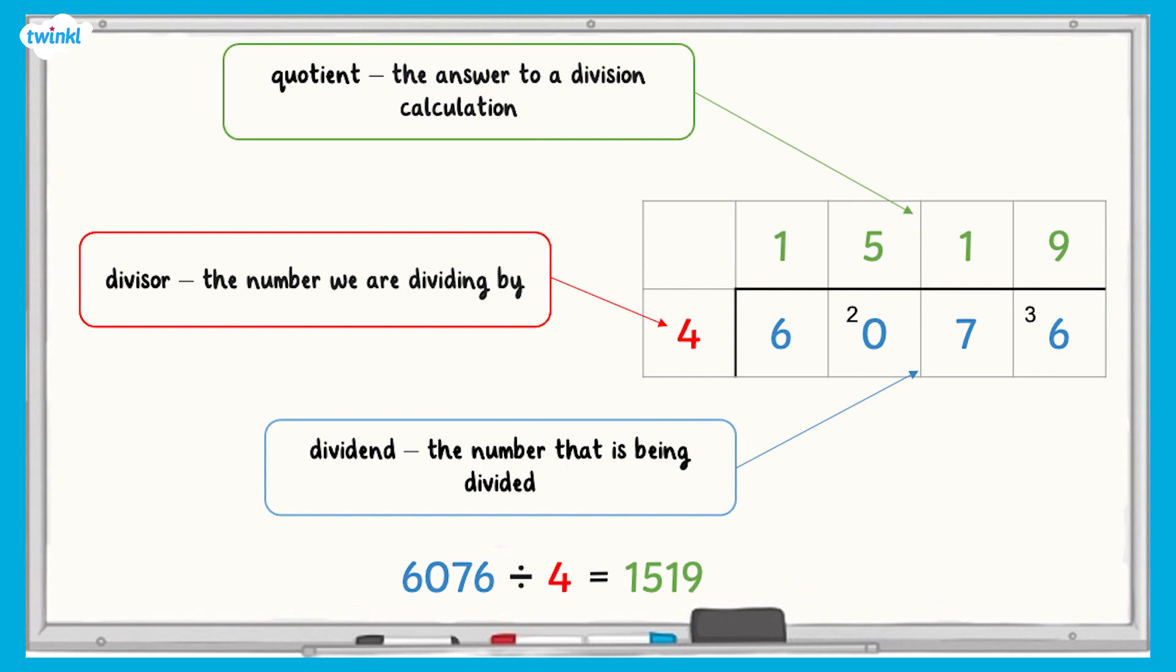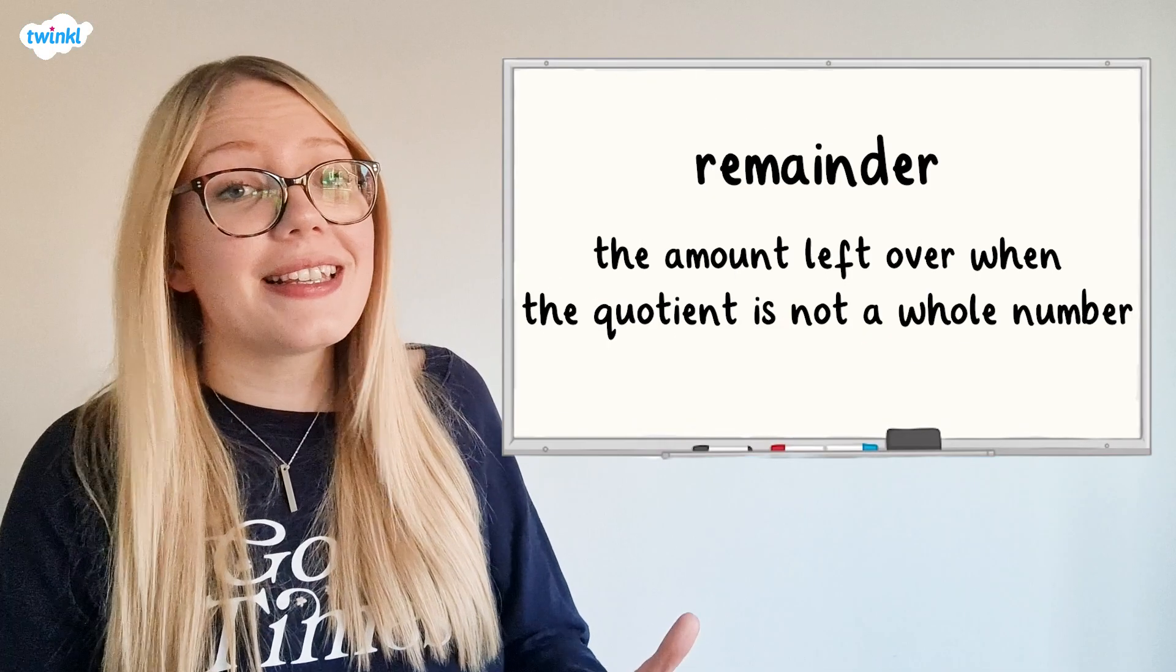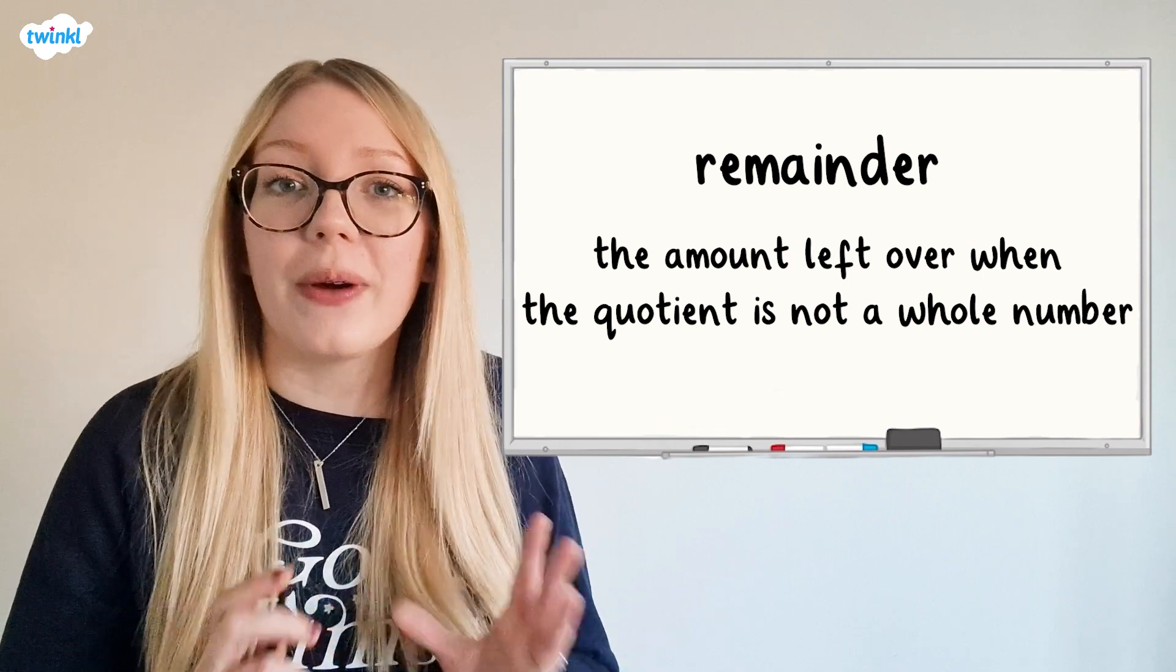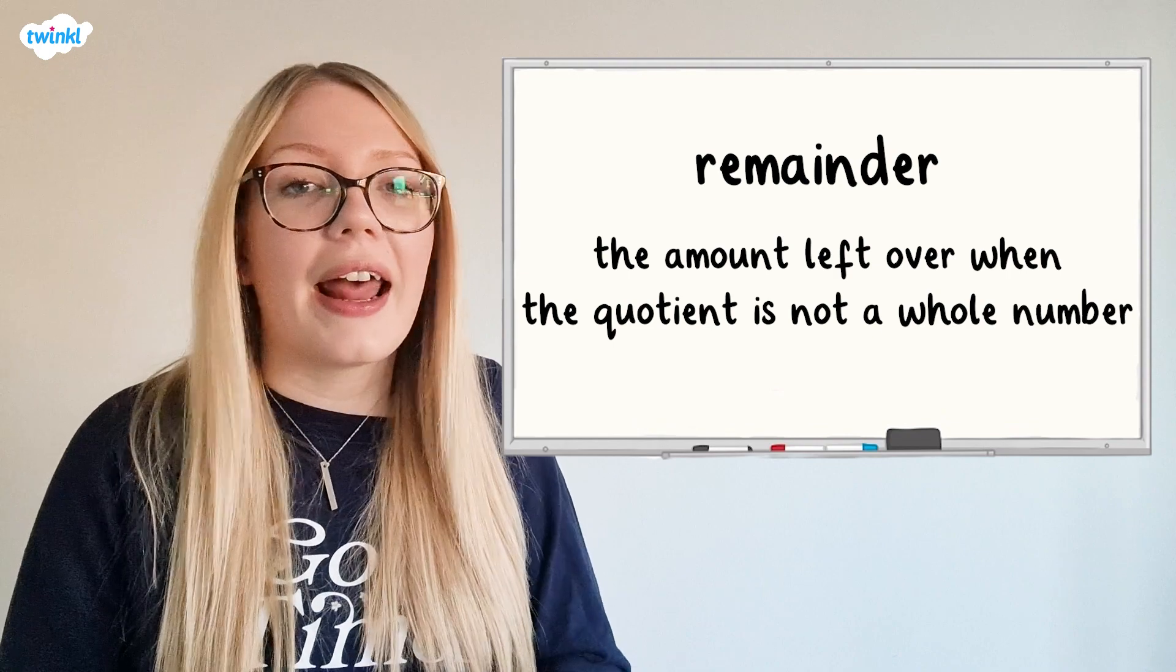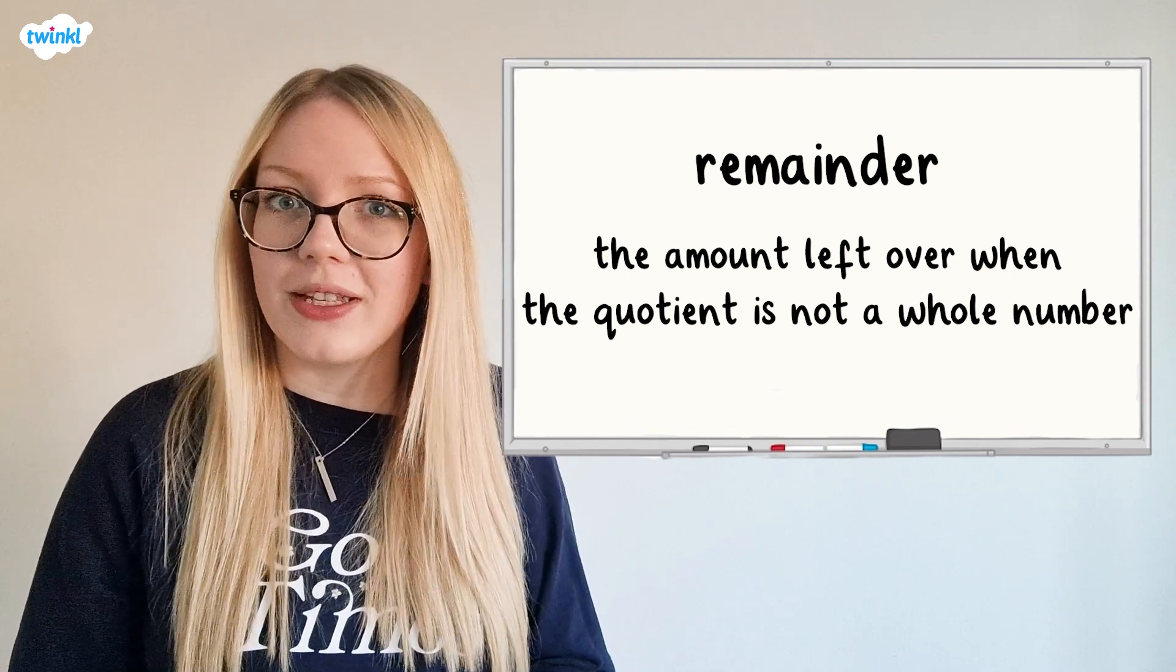If the quotient is not a whole number, there'll be some left over. This is called the remainder. We're going to take a look at some division calculations where there's a remainder, how to record the remainder, and how the remainder might be interpreted when solving a problem.